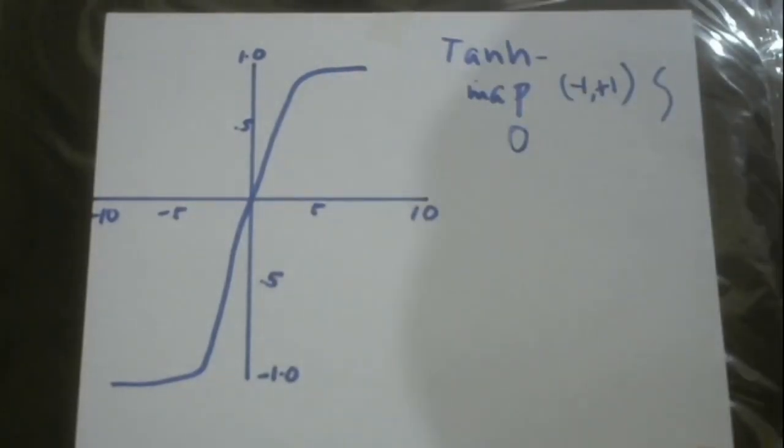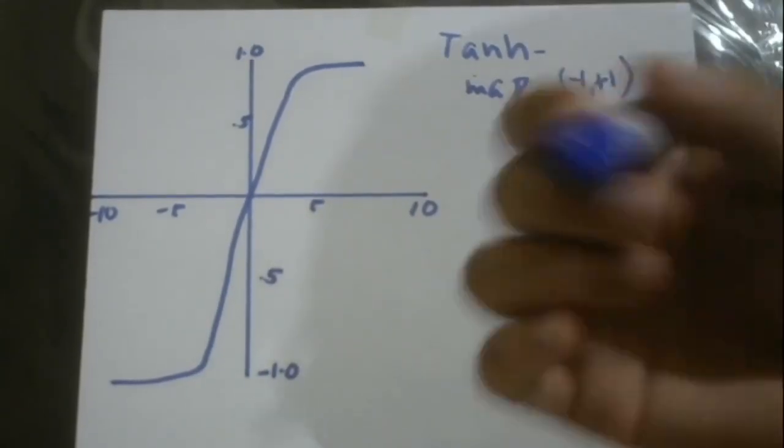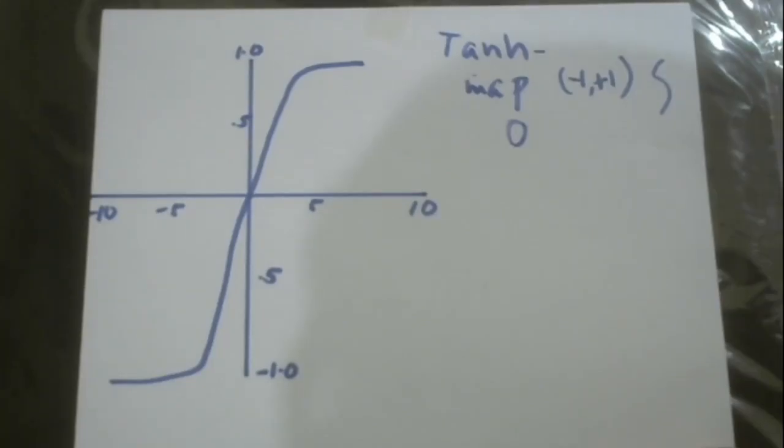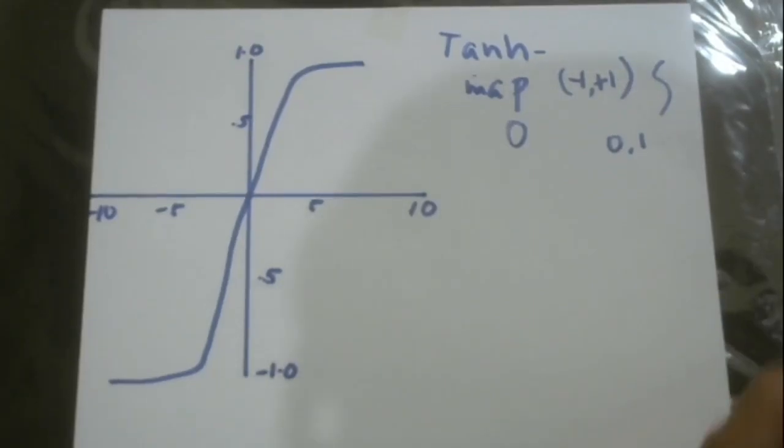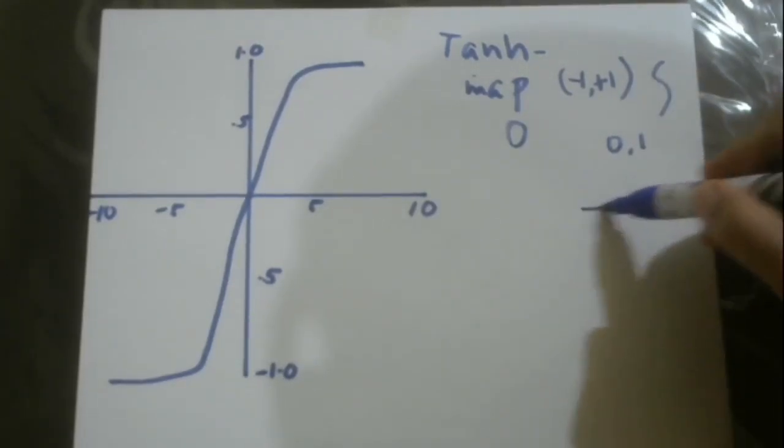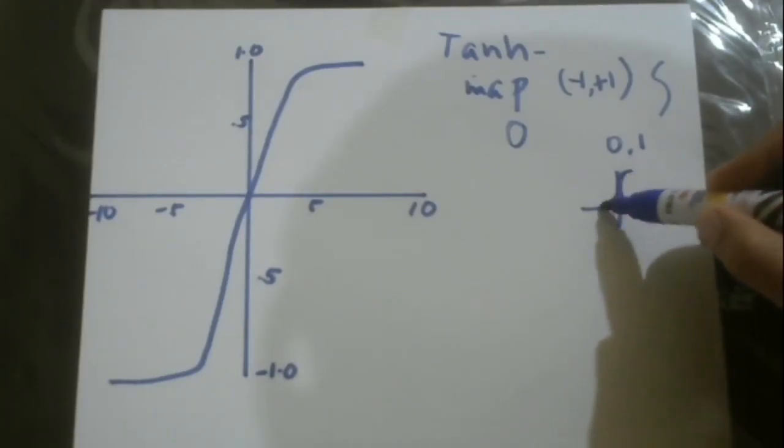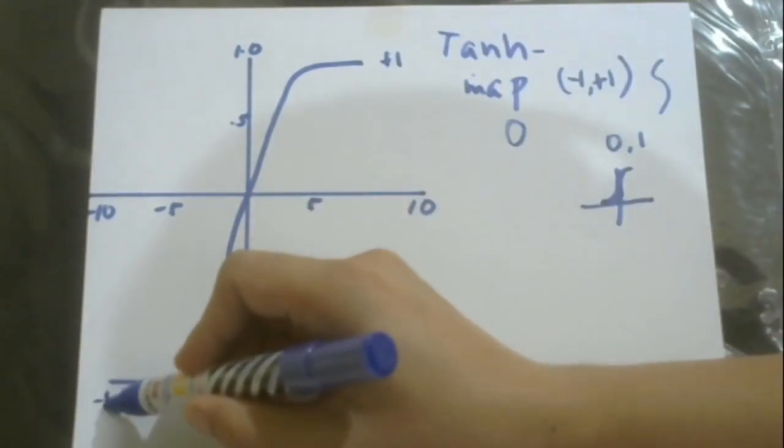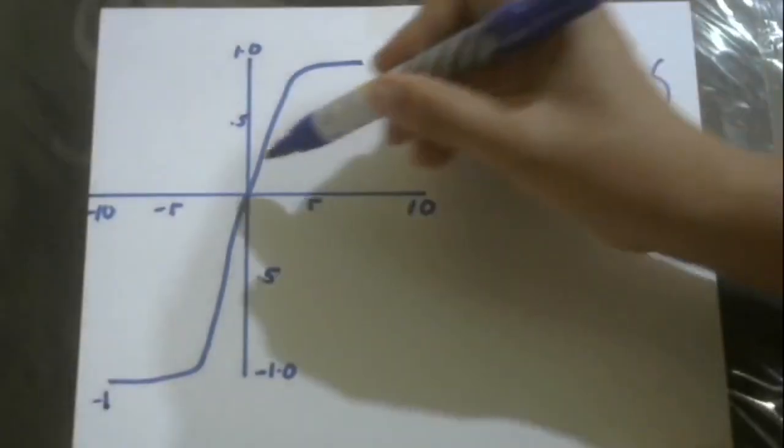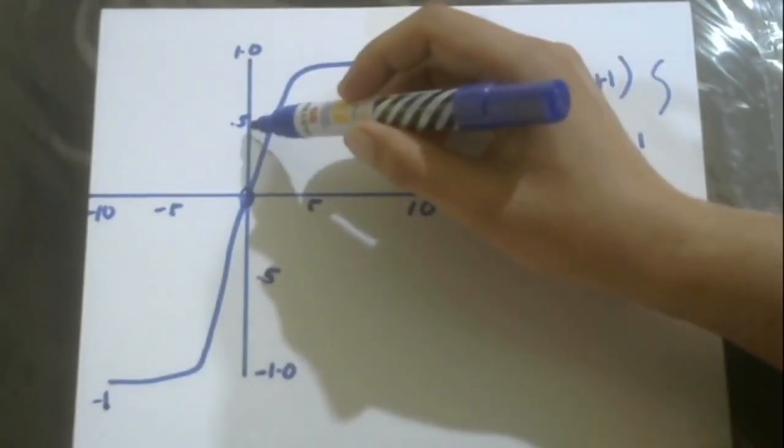Let's go back to sigmoid to have a better overview. Sigmoid has a range between zero and one. If we plot sigmoid, it would be somewhere here. But tanh is between negative one and positive one. It converges at the center, which is at zero, unlike sigmoid which converges at 0.5.